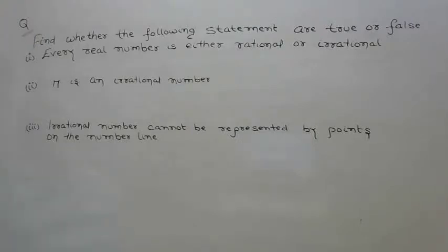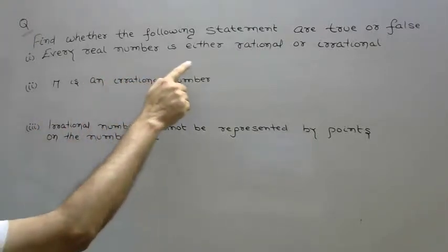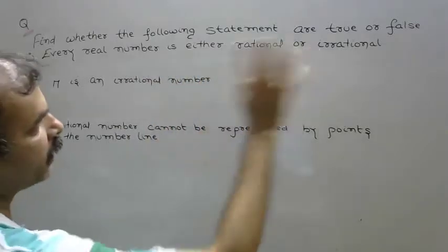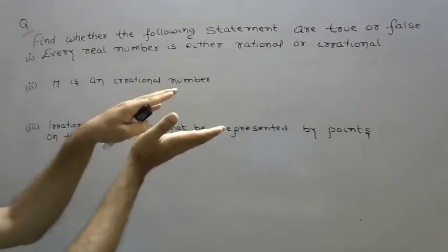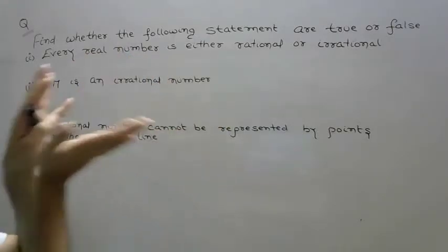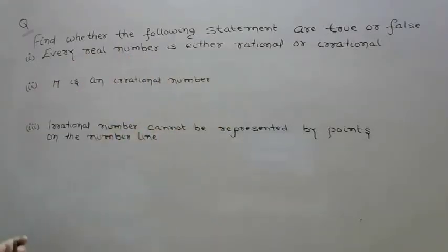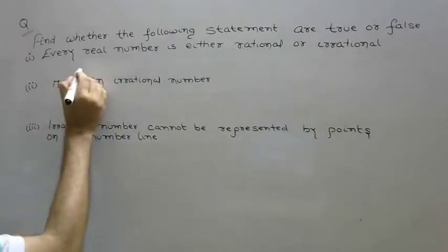Okay, first, every real number is either rational or irrational. What happens in the real numbers? Rational number and irrational number are both. It's true.